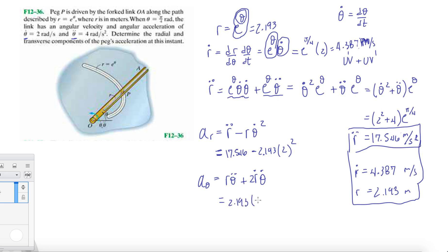And then here we have 2.193 times theta double dot, which is 4, plus 2 times 4.387 times theta dot, which is 2.